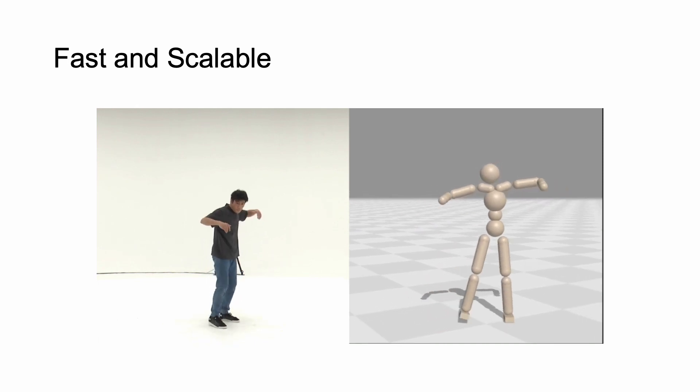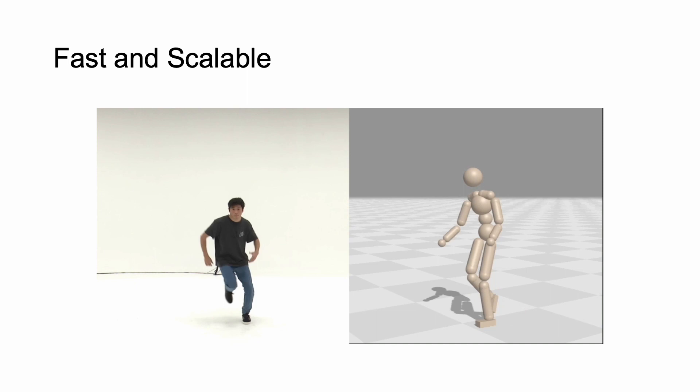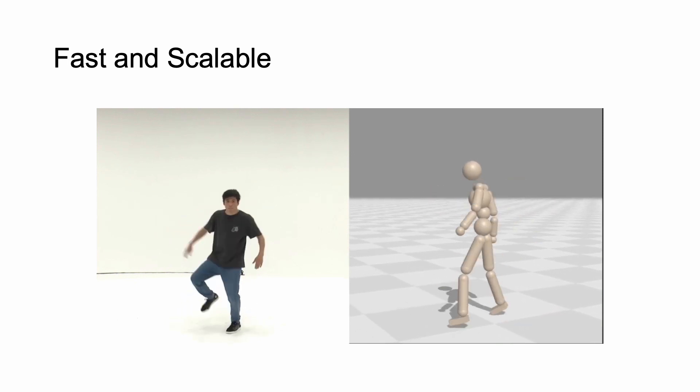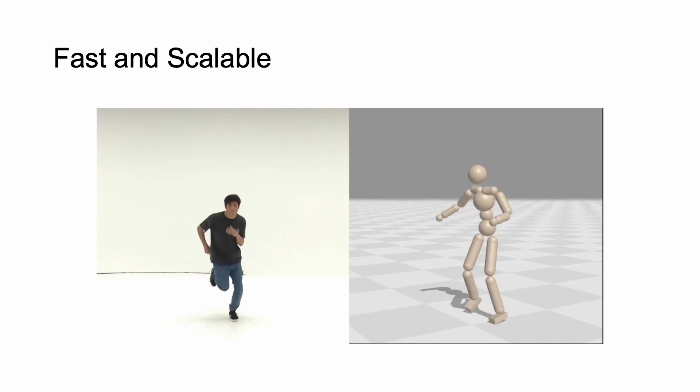Moreover, DiffMimic is fast and scalable. For example, it could enable the replication of human videos captured in natural and controlled environments, including dynamic dance movements at scale.